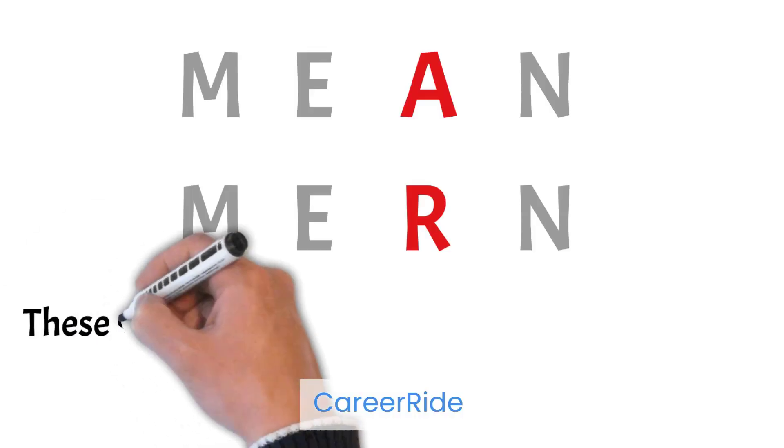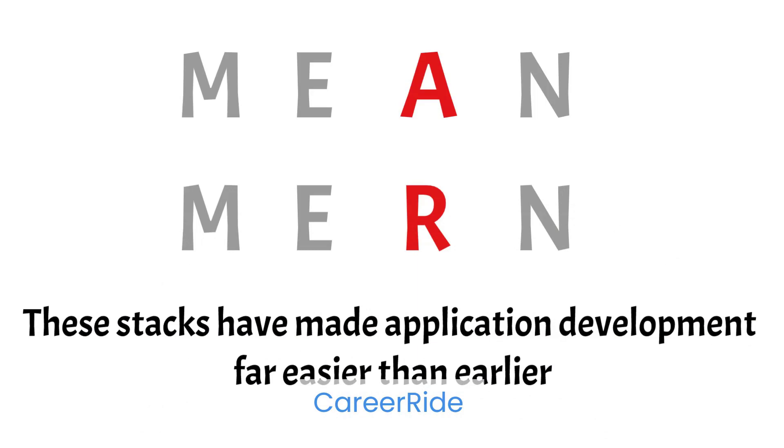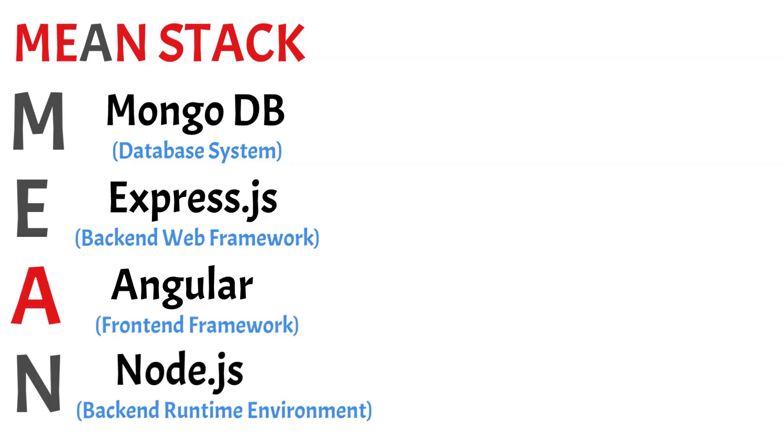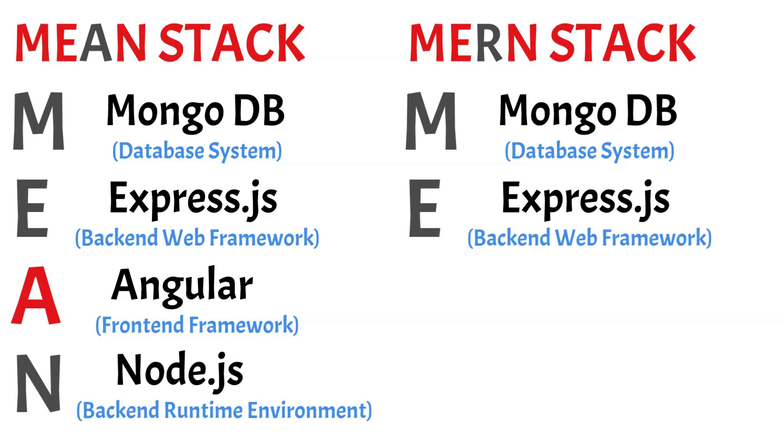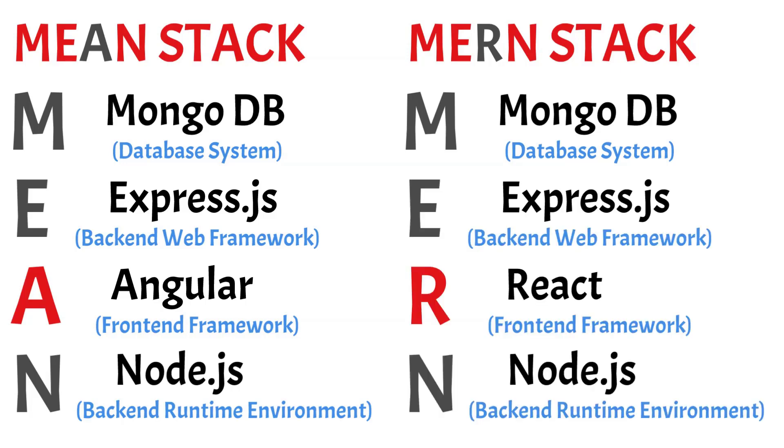There are many technology stacks that full stack developers use. Among all the stacks, MEAN and MERN are the most popular, used by developers to build web and mobile applications. Both are open source and JavaScript-based full stack technologies that help in building dynamic websites and mobile applications. MEAN stands for MongoDB, Express.js, Angular, and Node.js, whereas MERN stands for MongoDB, Express.js, React.js, and Node.js.